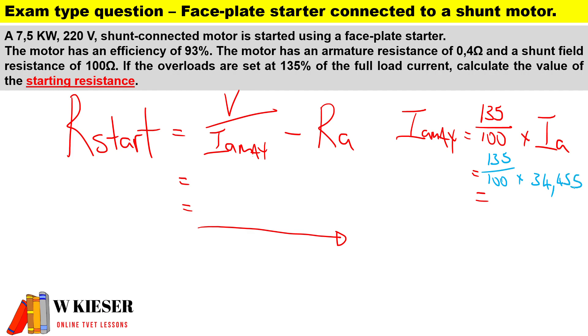Now we can actually go ahead and substitute. Our terminal voltage for our machine is 220V, the I_a_max of 46.514A, subtract our armature resistance of 0.4Ω. So therefore the resistors that are connected in series with the armature will be 4.33Ω.